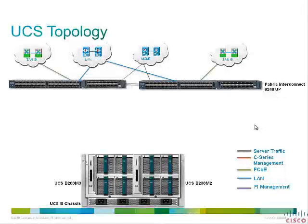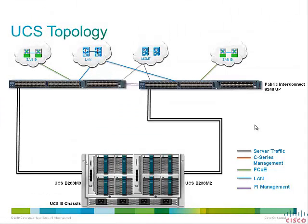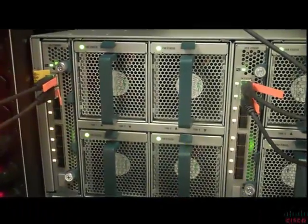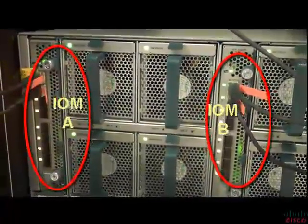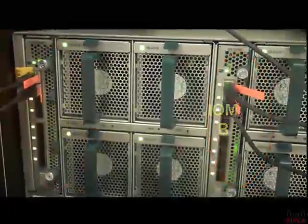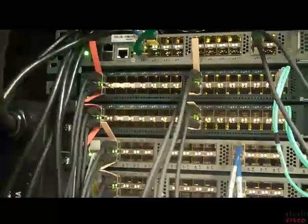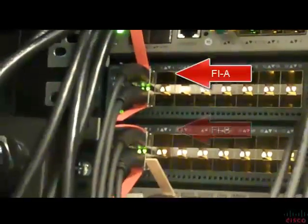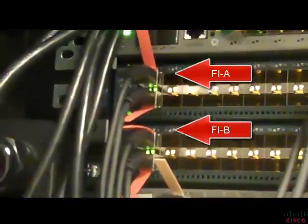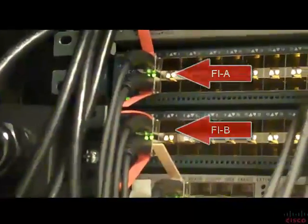How do you connect chassis to Fabric Interconnect? You can use one, two, four or eight cables per module. For system resiliency and throughput, it is recommended that you use a minimum of two connections per IOM module. In this video, we are using the new 2208 IOM module inside the chassis. IOM module A is connected to Fabric Interconnect A, and IOM module B to Fabric Interconnect B, each with two cables. You can also create a port channel between the IOM module and Fabric Interconnect for higher system availability and throughput.